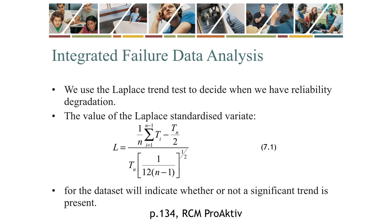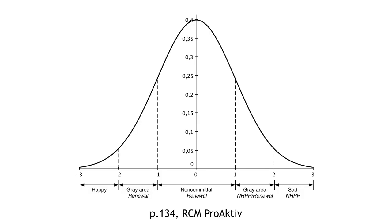We use the Laplace trend test to decide when we have reliability degradation. The value of the Laplace standardized variant L for the data set will indicate whether or not a significant trend is present. Conservatively, if L lies between minus one and plus one, the data set has no inherent trend and renewal theory can be used. If L is smaller than minus two, the data set shows a definite inclination towards reliability growth — a non-maintenance case. If L is larger than plus two, the data set shows a definite inclination towards reliability degradation and repairable systems theory should be used.